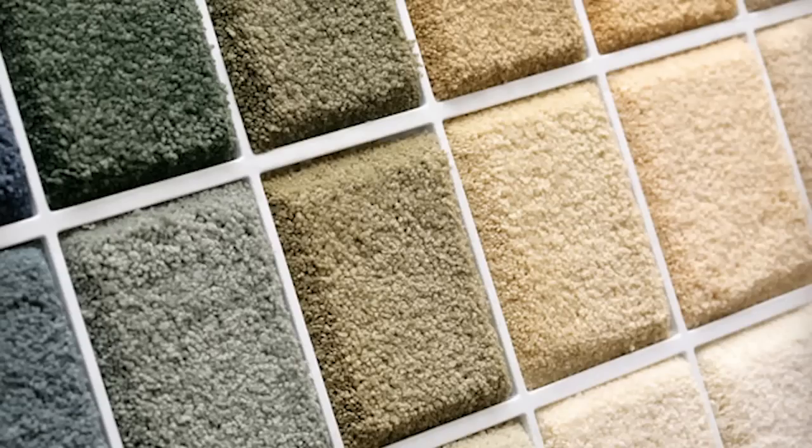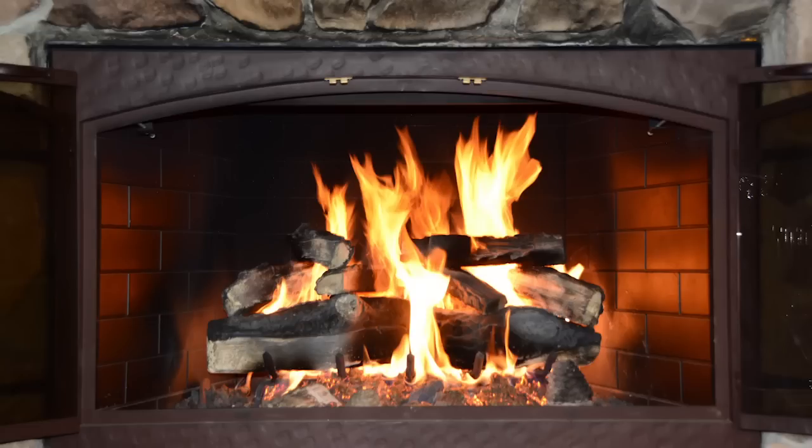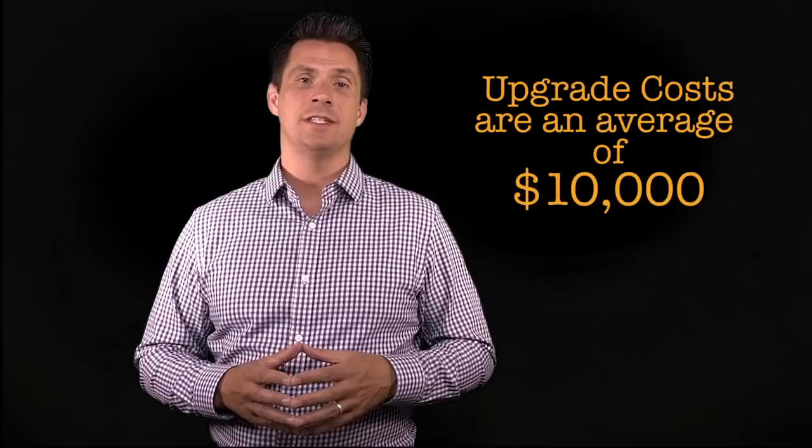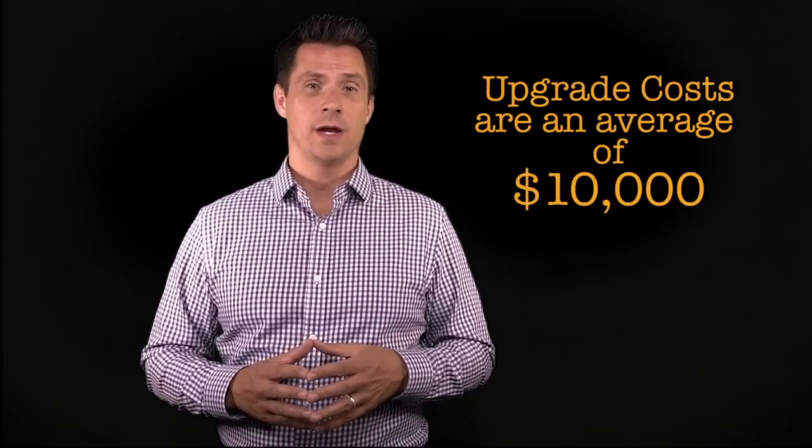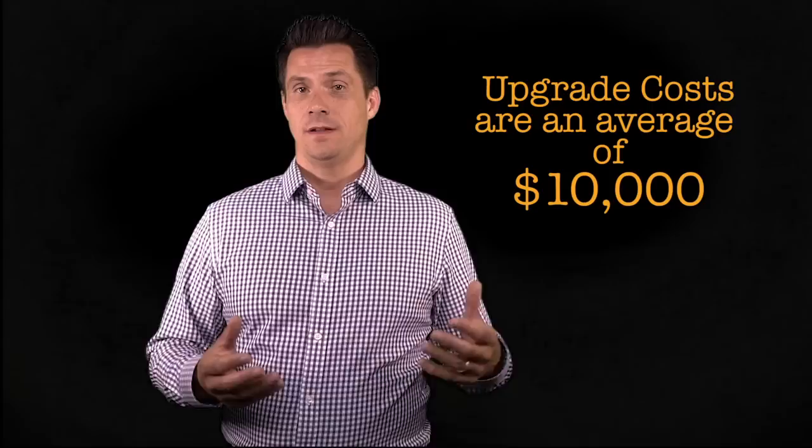But then you notice that the model home, none of the features in the model home actually are what's included in the price. They probably have granite countertops, tile, wood flooring, upgraded carpet, fireplace. They have all these things that aren't actually within the base price of the home. Most people do on average $10,000 worth of upgrades. And so all of a sudden now we're another $10,000 and that could be outside of your price range.